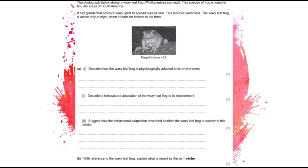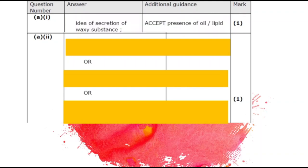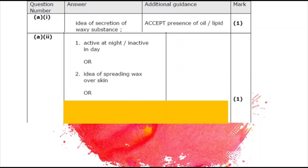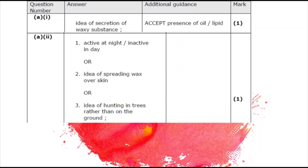The questions ask: describe how the waxy leaf frog is adapted physiologically to its environment; describe a behavioral adaptation; and suggest how that behavioral adaptation enables the frog to survive in this habitat. The physiological adaptation is secreting a waxy substance — a process inside the body, though the examiner would also accept the presence of oil or lipid. For behavioral adaptation, valid answers include: only active at night, spreading wax over its own skin, or hunting in trees rather than on the ground.